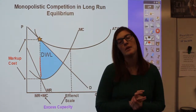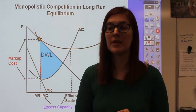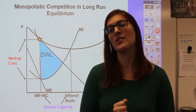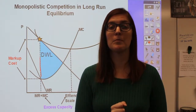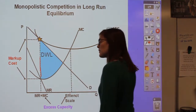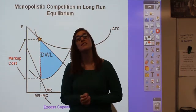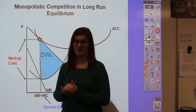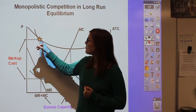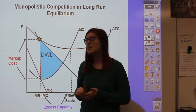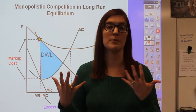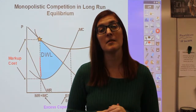This illustrates how a monopolistically competitive firm, even in long-run equilibrium, is not allocatively or productively efficient. We are not producing at the minimum of ATC, and we're not producing where price equals marginal cost. That difference between where we would be in perfect competition and where we are in monopolistic competition is known as market cost. The monopolistically competitive firm has some market power, so their price is above marginal cost, which is above the socially optimum price.